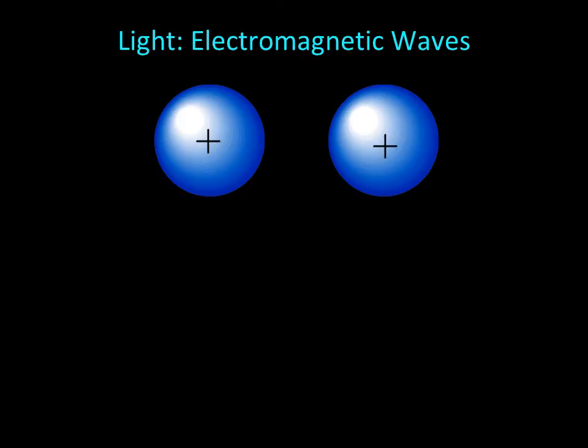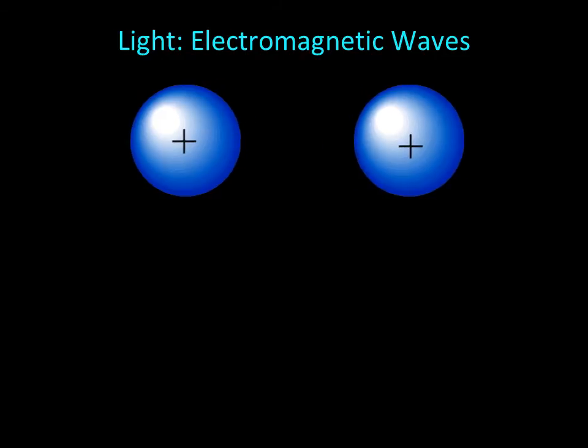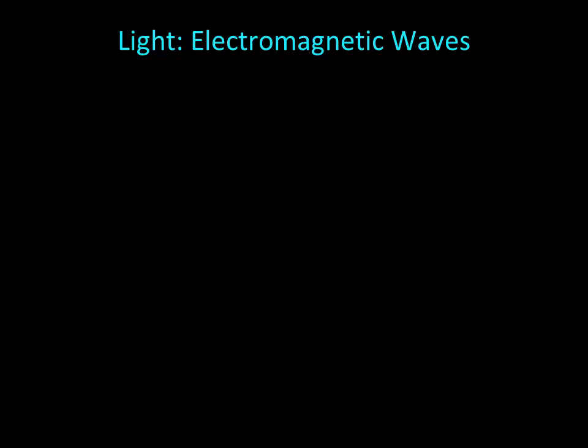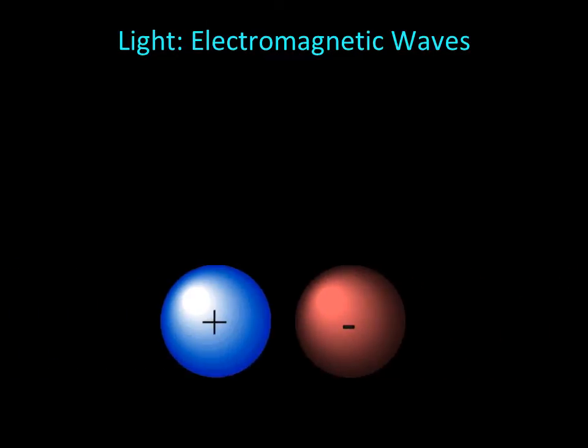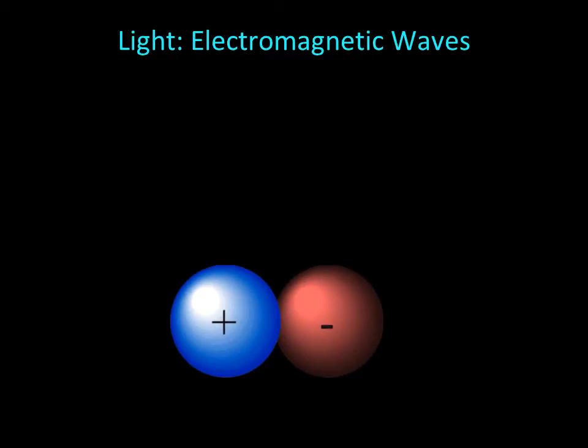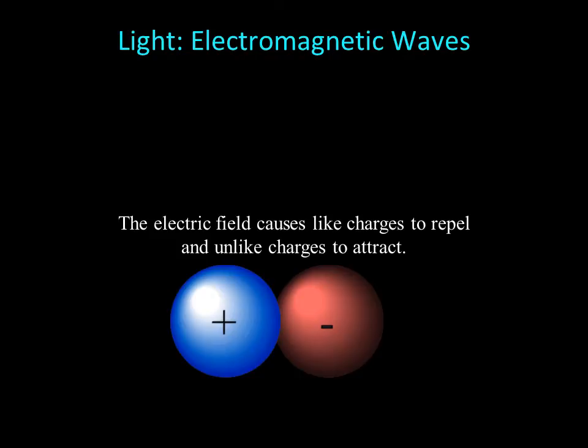If we could hold two positive charges in our hands, they would repel like the magnets. The repulsive force arises from the electric field between the charges. A negative charge and a positive charge cause an attractive force, again due to the electric field.